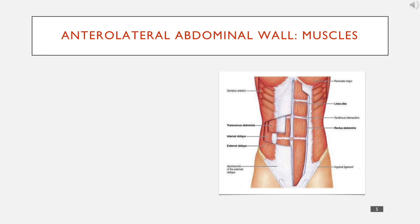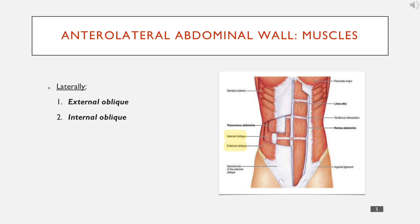I'm talking about the anterolateral abdominal wall first. The first thing to get your head around is the muscles — you have to think in terms of laterally and medially. Laterally, the first one we have is the external oblique. Medially we have the internal oblique. External oblique is like fingers in pockets going inferior-medially, and internal oblique is perpendicular to that and just deep to it.